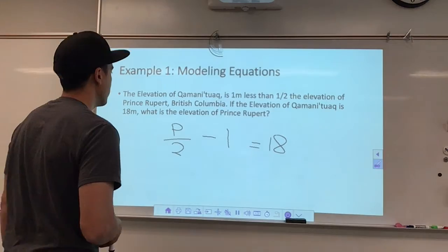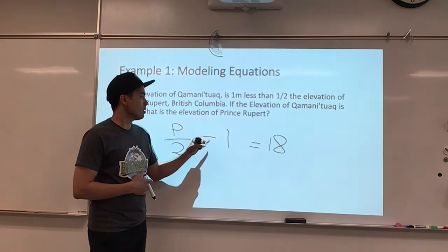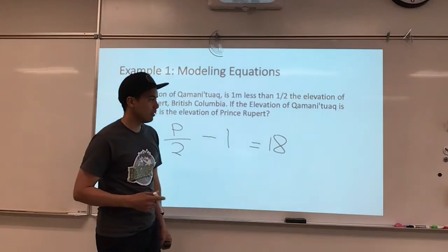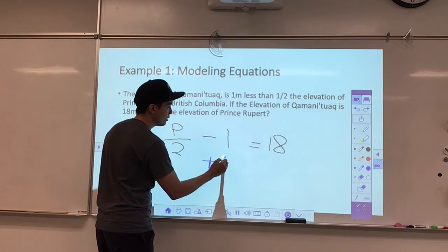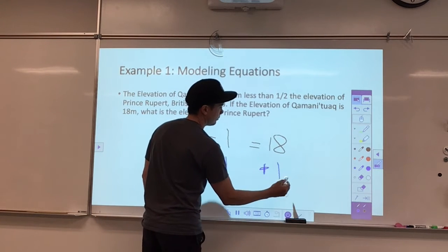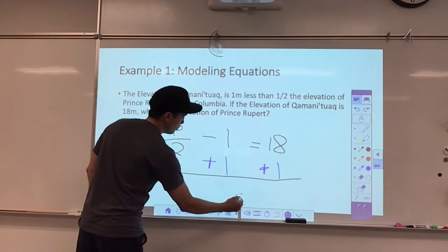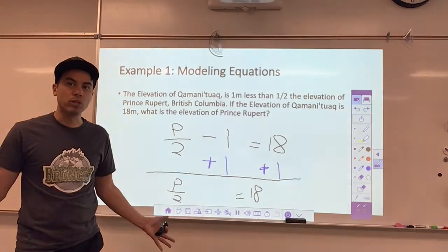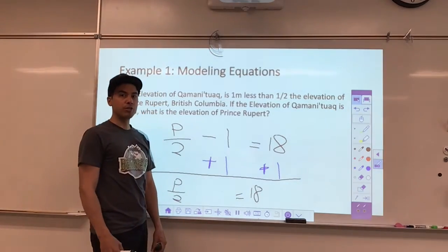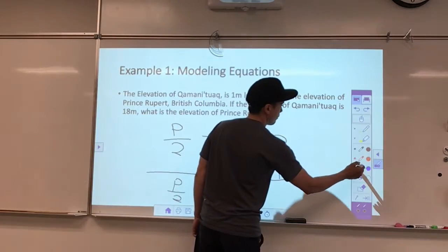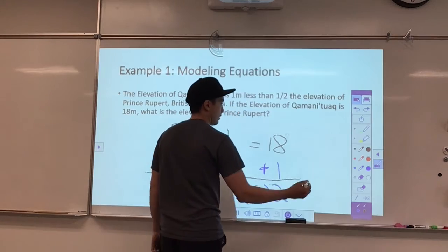These should be the same as each other, so we want to come up with a way to solve this. In the same way as we looked at in our last topic, we want to get rid of our constant term first. I would do that by adding one to both sides, and then I'm just down to P over two equals 19. This is just a one-step equation of P being divided by two — I want to choose the opposite operation, which is multiplication, so I want to multiply both sides by two.